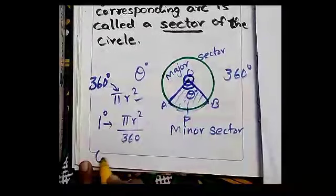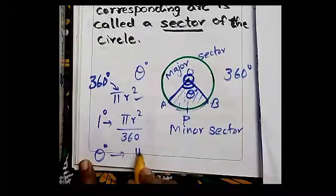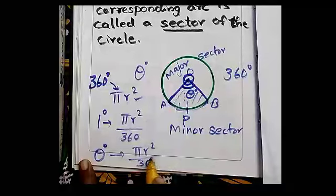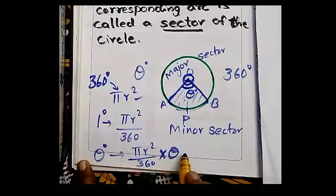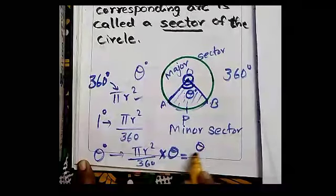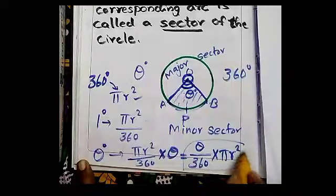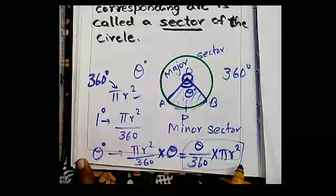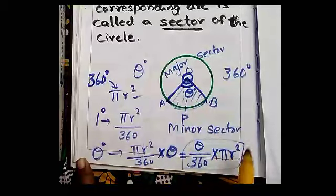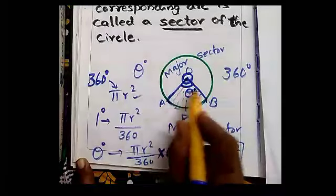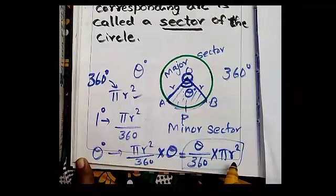In the same way, if the angle is theta degrees, the area of the portion is θ/360 × πR². This is the formula for finding the area of the sector which makes an angle of theta degrees at the center, where R is the radius of the circle. So the formula is: θ/360 × πR².